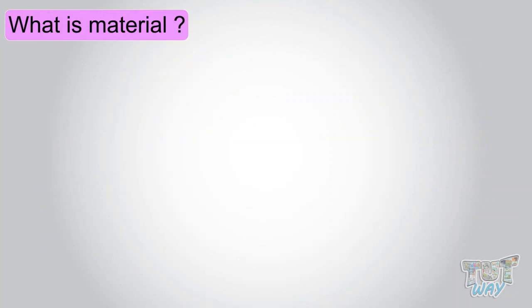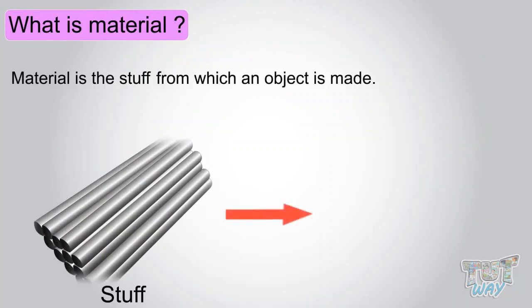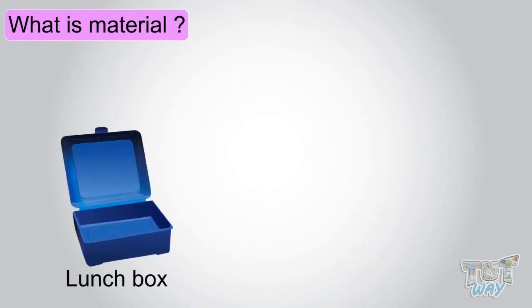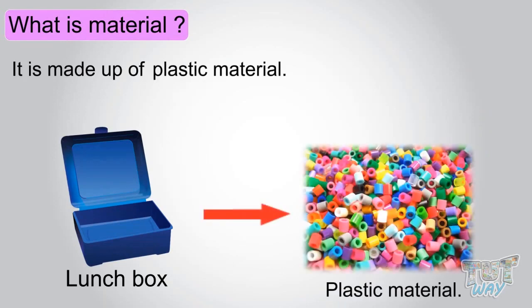So, what is material? Material is the stuff from which an object is made. Like what is the material of this lunchbox? It is made up of plastic material.